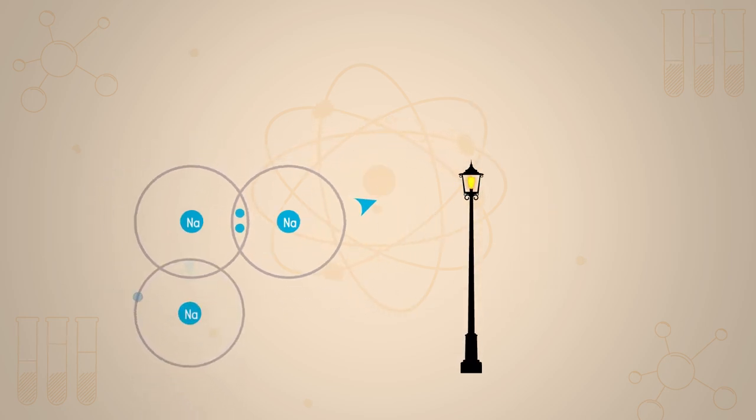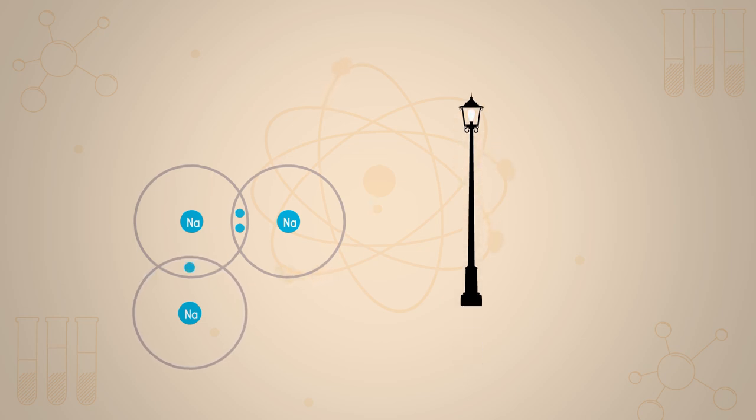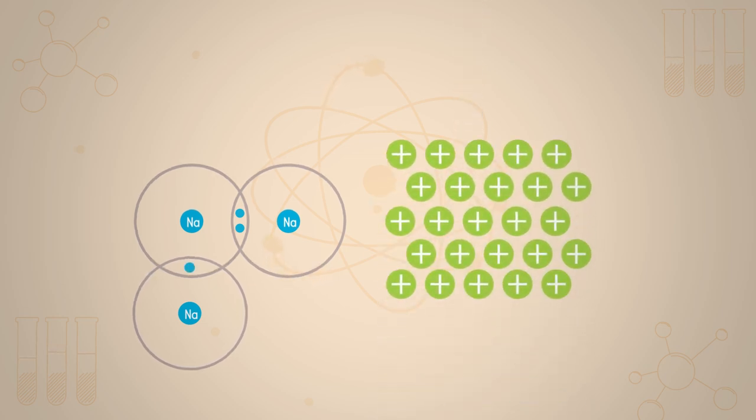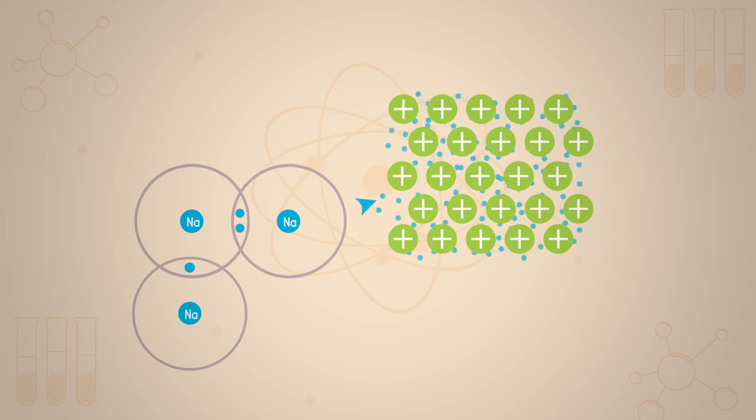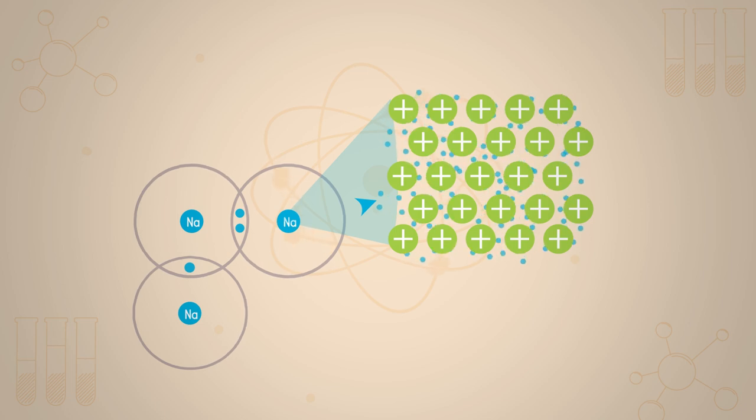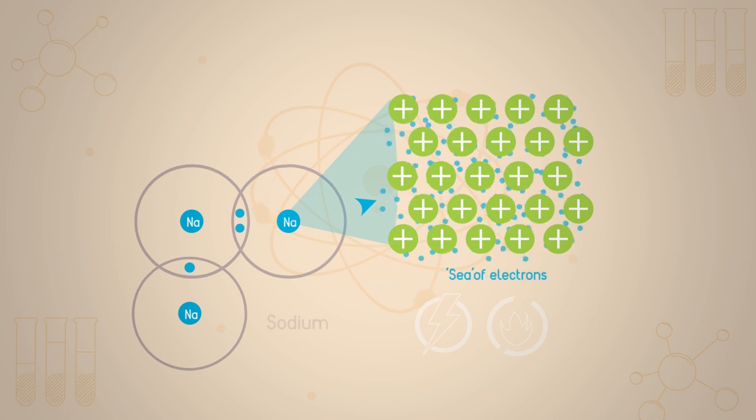However, as additional atoms approach they too will be attracted in because there will always be space in the outer shell of the atoms. So sodium, as an element, forms a closely packed three-dimensional metallic lattice where the atoms are bonded by a sea of electrons in these partially filled outer shells.